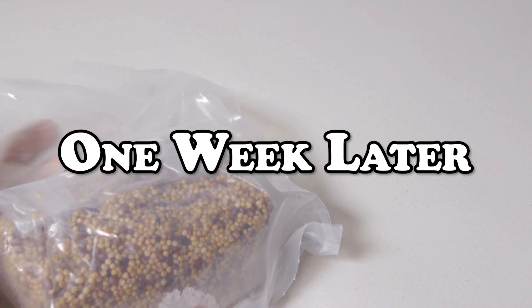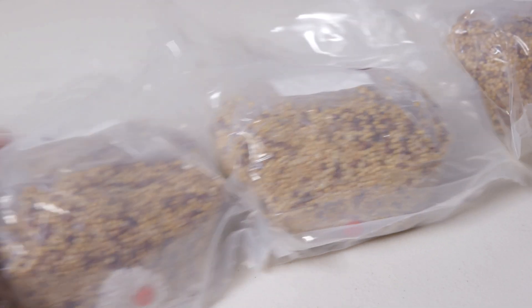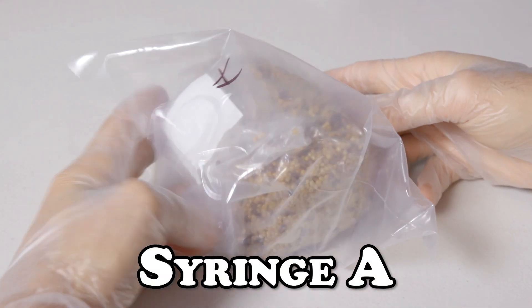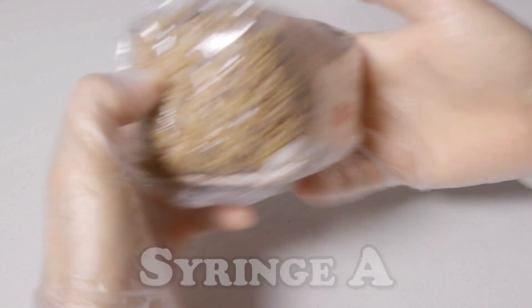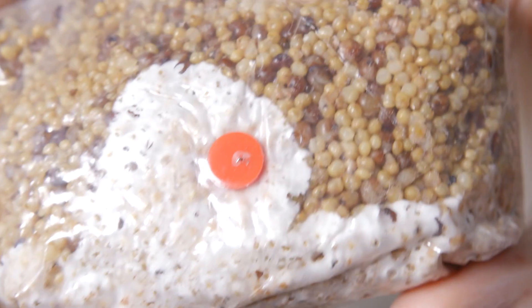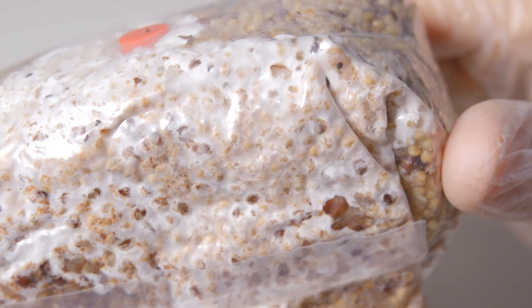Here we are one week later and we're going to take a look at the progress our spores have made in our bags. We'll start off with our first bag labeled syringe A, and on initial inspection we have solid mycelial growth here by the inoculation port and everything looks to be going well. The grains look to be contamination free and the bottom is also nice and healthy, which is a good sign.